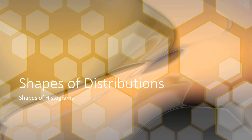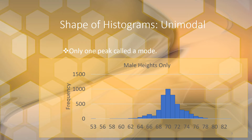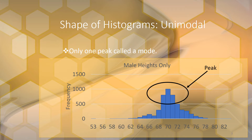In this video I'm going to talk about the shapes of distributions, which means we're going to talk about the shapes of histograms. The first term we're going to go over is unimodal. Unimodal means that there's one peak, and these peaks are called modes. For this histogram of male heights, we have one peak — that high point is called a mode. 'Uni' means one and 'modal' means peak.